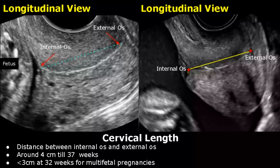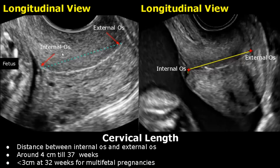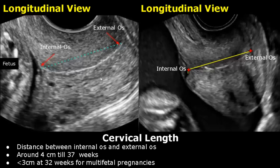Hello everyone, this is Dr. Sam and in this video we will learn how to measure cervical length. Cervical length is the distance between the internal os and external os. This length is often measured in the setting of pregnancy, and the transvaginal approach is the most accurate for measuring cervical length.